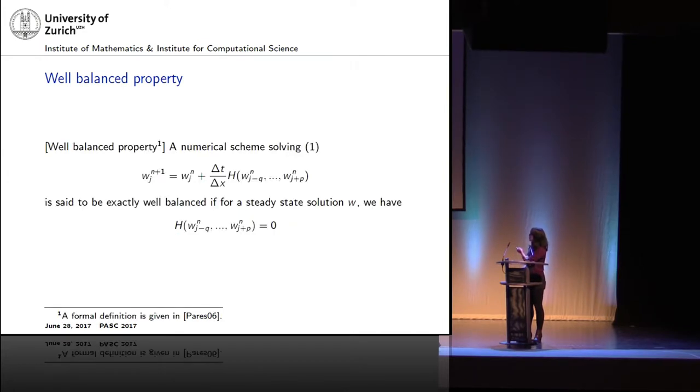This is just the one definition that I think is important. If we recast, any numerical scheme can be written in this form. Explicit numerical scheme: you have your solution at T plus one, N plus one, is given by your solution at the previous time step, plus some update function. And, now, a well-balanced scheme is going to be such that H will be zero if you have a steady-state solution. So, you don't do any updates. And, there's a formal definition given by Parés in 2006.